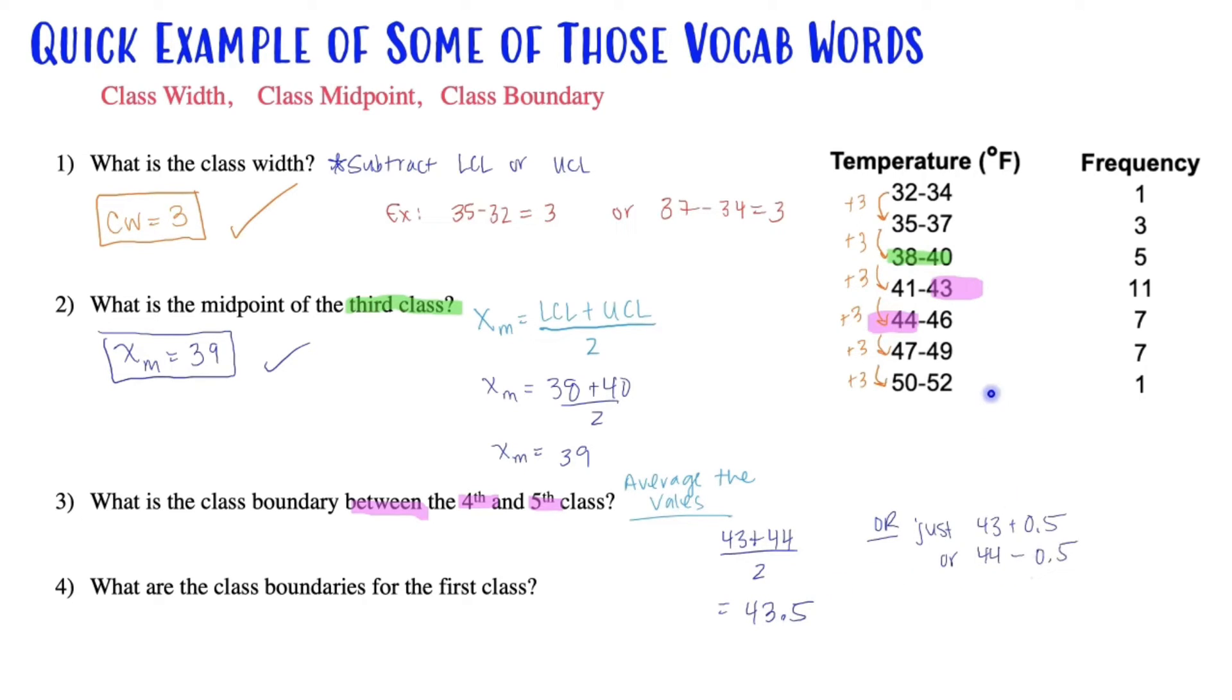You also, since these are whole numbers, you could add and subtract 0.5 to it. That's a quick way also to get to the class boundary. That is up to you how you do the class boundary. You just need to know how to do that calculation.